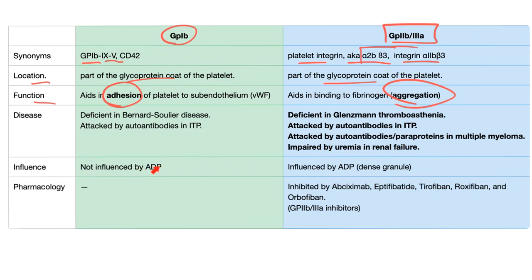GP1B is not influenced by ADP, but GP2B3A is influenced by ADP. That's why patients who have Glanzmann's thrombasthenia, when you give them ADP trying to aggregate their platelets, they do not respond.